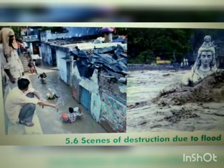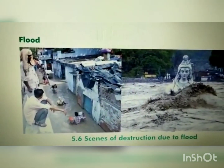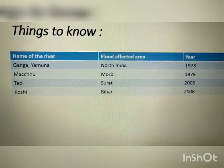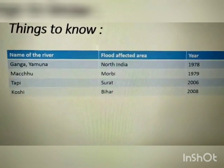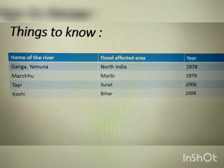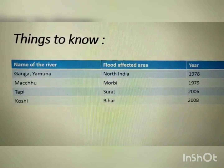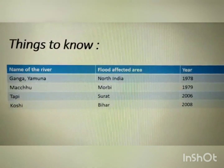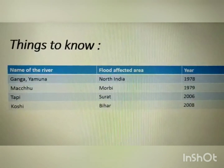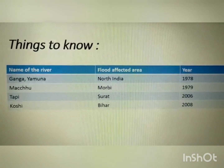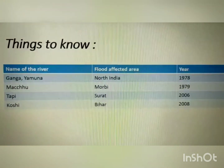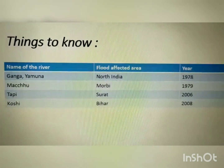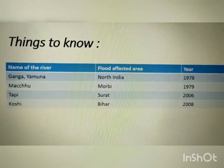Let's have a look at the table which shows where floods have occurred and in which year. There was a flood in 1978 in the rivers Ganga and Yamuna in North India. In 1979 there was a flood in the Machu river in Morbi, Gujarat. In 2006 there was a flood in Surat in the river Tappi. In Bihar, in 2008, the Koshi river flooded and caused great destruction to the normal life of the people.